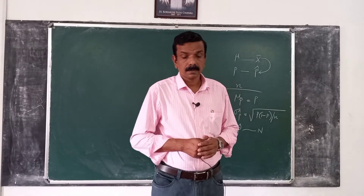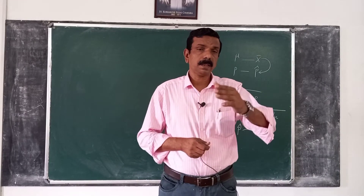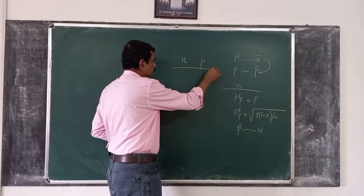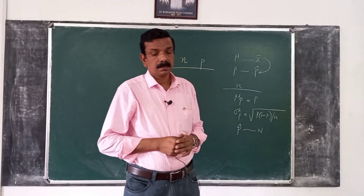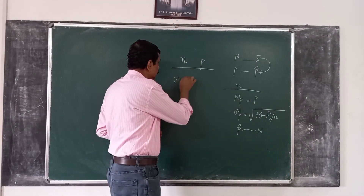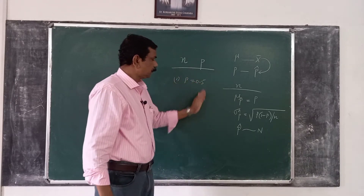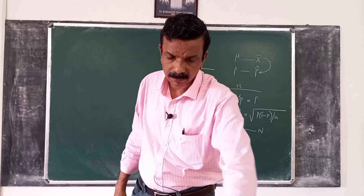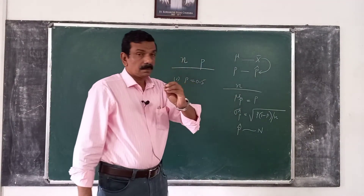The accuracy of the normal approximation depends on n and p. If p is close to 0.5, the approximation is quite accurate even for moderate n.